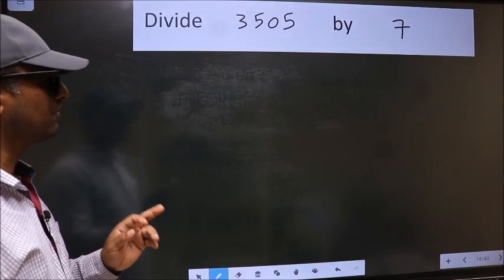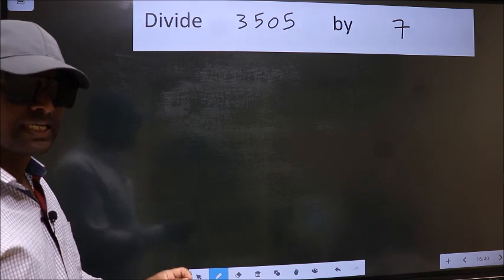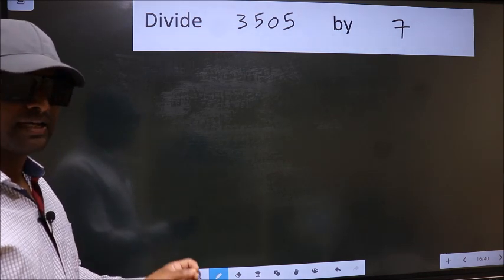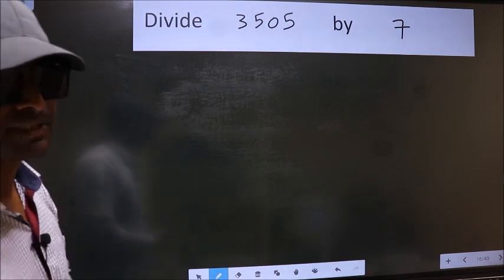Divide 3505 by 7. While doing this division, many do this mistake. What is the mistake that they do? I will let you know. But before that, we should frame it in this way.